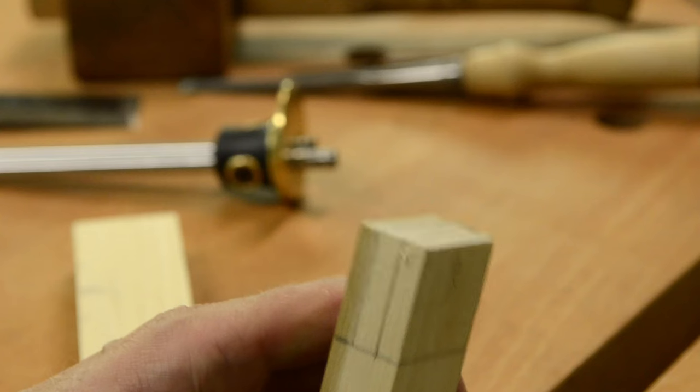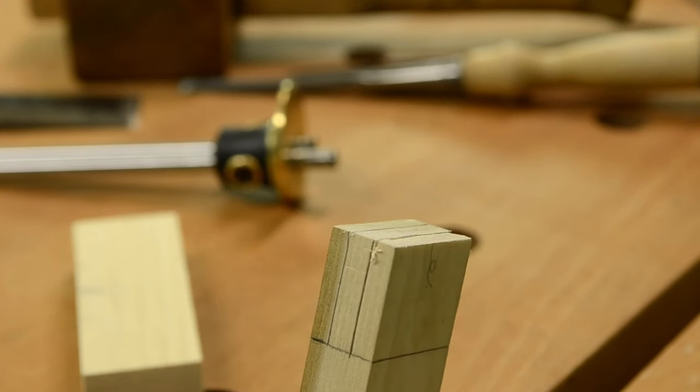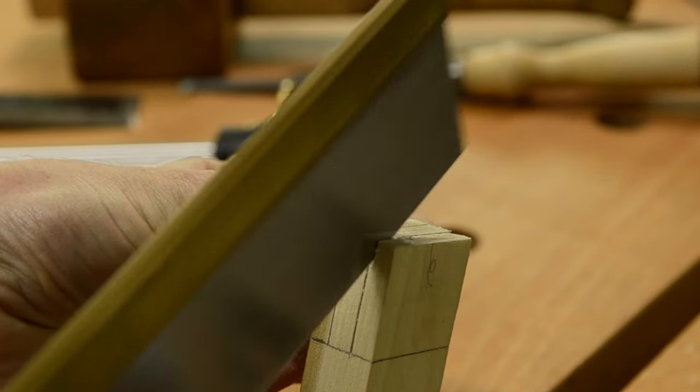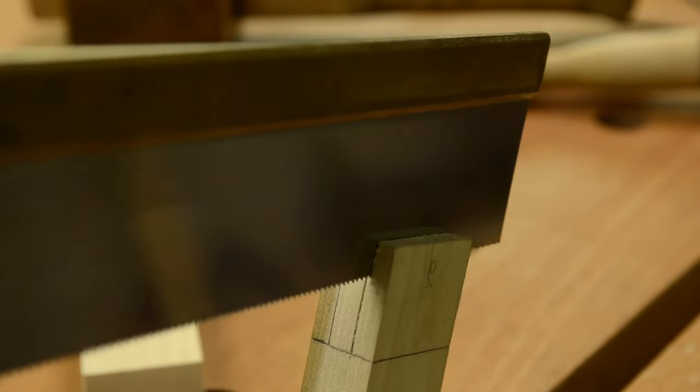Flip your tenon around in the vise and then we're going to come back from the other side. So it should be a lot easier to go down through there because you've created that kerf in the top and you're kind of following the kerf from the other side down.